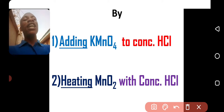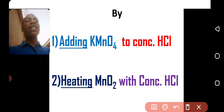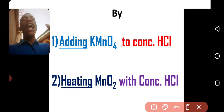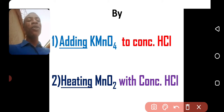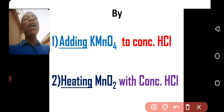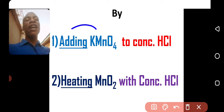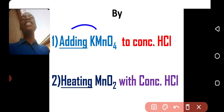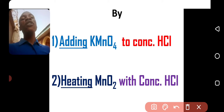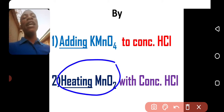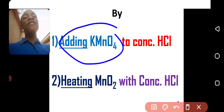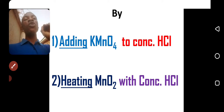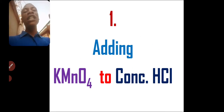That is a form of oxidation in which KMnO4 is acting as an oxidizing agent. The second method is by heating MnO2 with concentrated HCl — also an oxidation reaction where MnO2 is acting as an oxidizing agent. The reason we just add KMnO4 but need to heat with MnO2 is because KMnO4 is a stronger oxidizing agent. So KMnO4 easily converts HCl to chlorine gas without heating.